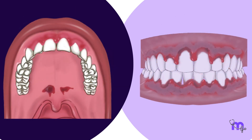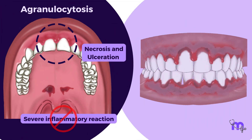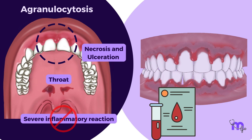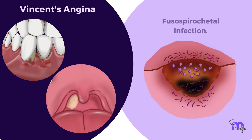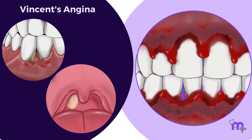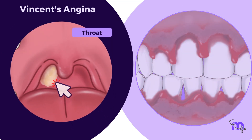The seventh differential is agranulocytosis. This condition resembles ANUG due to the presence of necrosis and ulceration of gingiva, but lacks the severe inflammatory reaction. It also shows lesions on the throat and other mucous membranes. Blood studies serve to differentiate between these two conditions. The last differential is Vincent's angina. Similar to ANUG, it also has a fusospirochetal infection. However, while ANUG is restricted to the marginal gingiva, Vincent's angina can extend to the oropharynx and the throat, with painful membranous ulceration, edema, and hyperemic patches that may extend to the larynx and the middle ear.